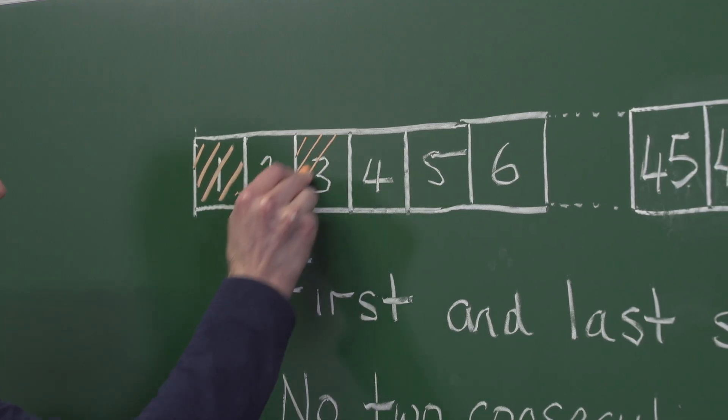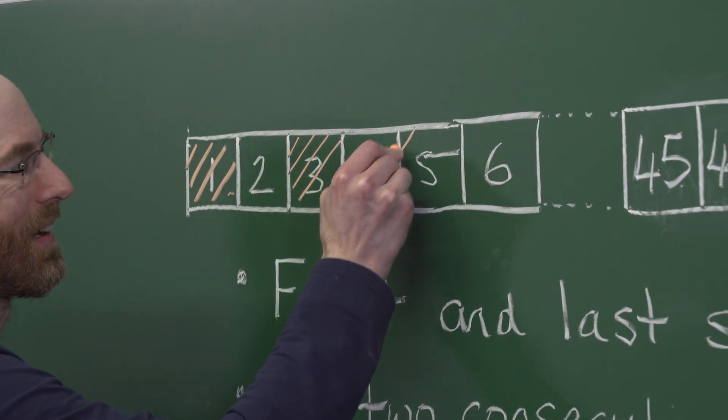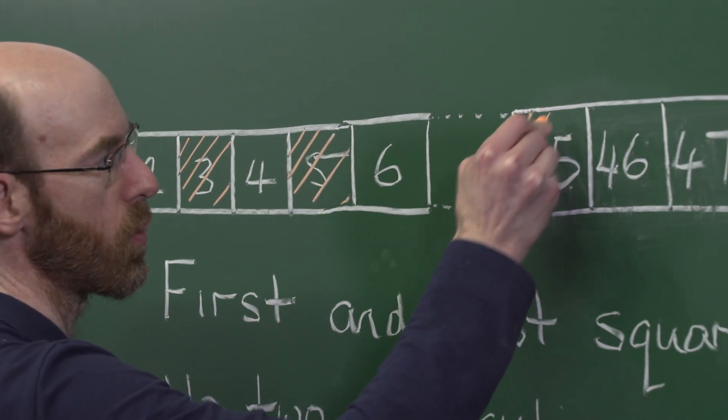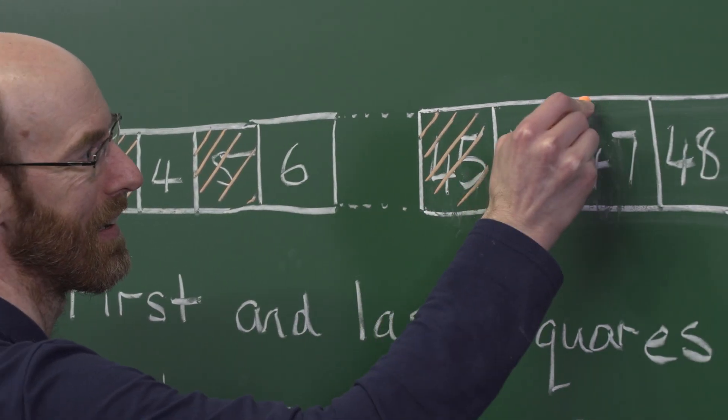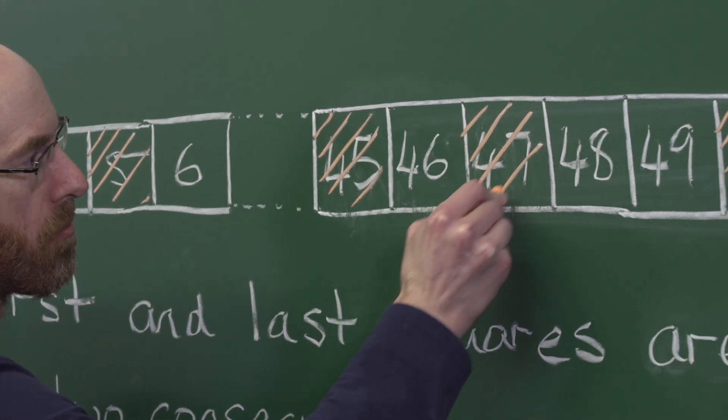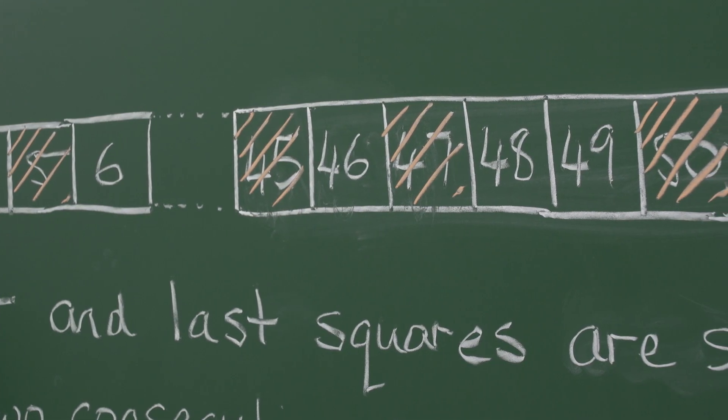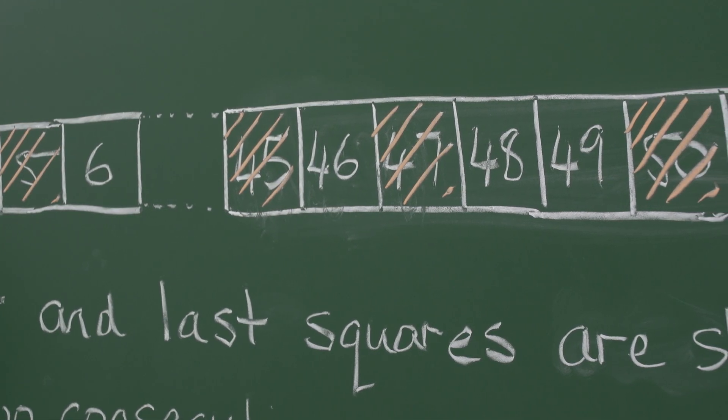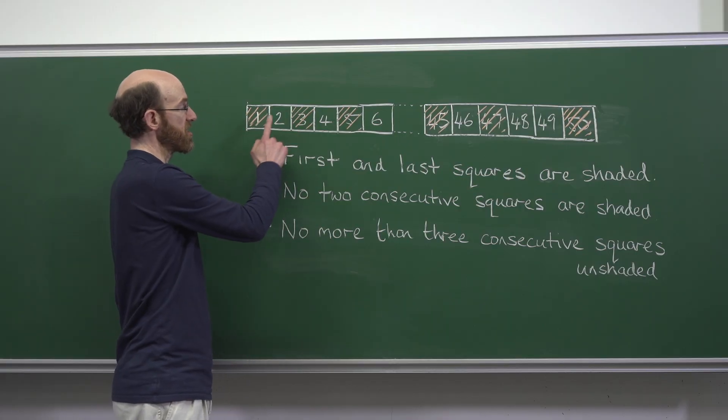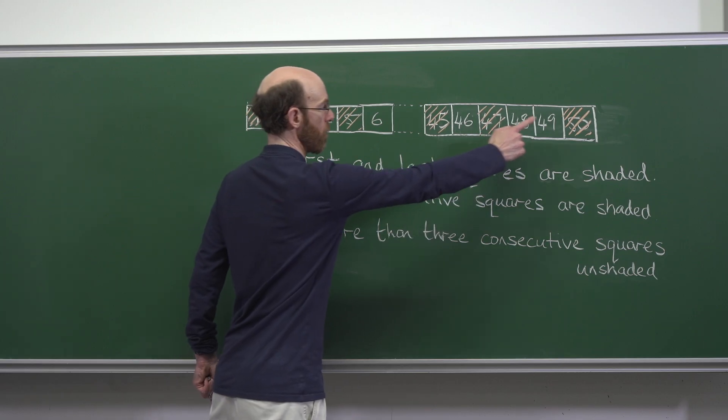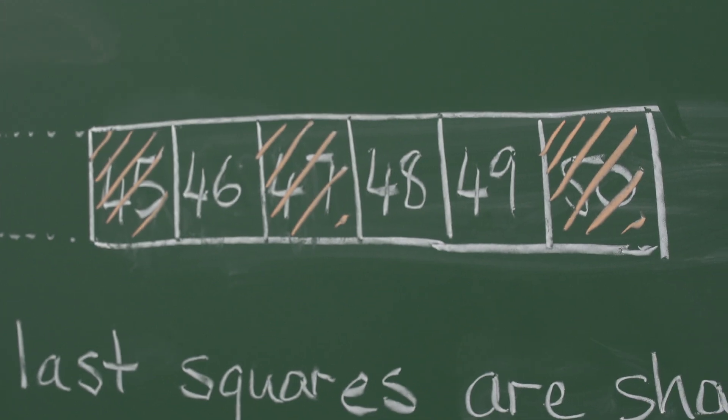If I shade in every odd number, this goes well up until 49 which I can't shade because it's next to 50. And we can see we have indeed shaded 25 squares: one, two, three, that will be our 24th and the final one will be our 25th.